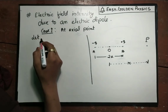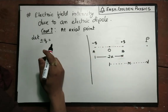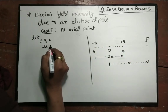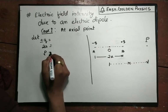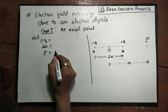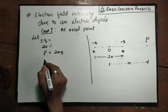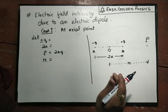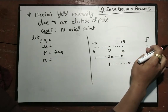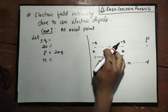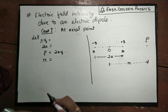Let plus q and minus q be the source charges of the dipole. Let 2a be the length of the dipole. Small p is the dipole moment. Let r be the distance of point B from the center of the dipole.